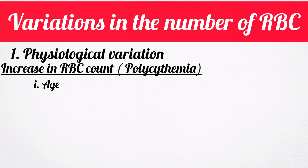Number two is sex. Before puberty and after menopause, the red blood cell count is similar to that in males. During the reproductive period of females, the count is less, reducing to 4.5 million per cubic millimeter.